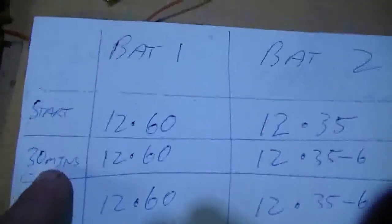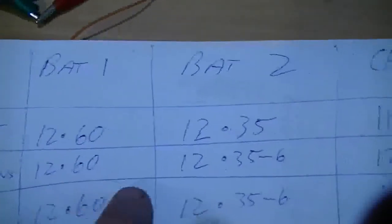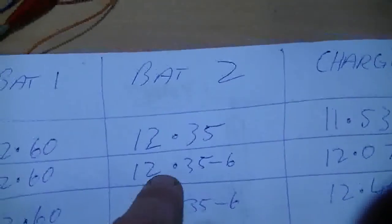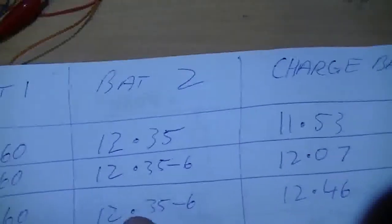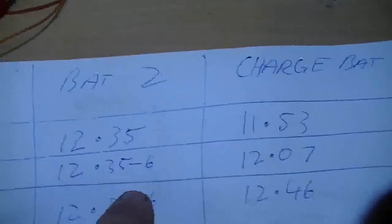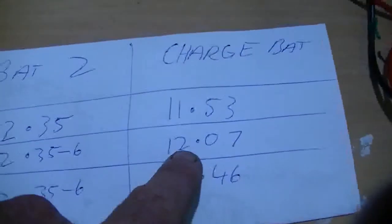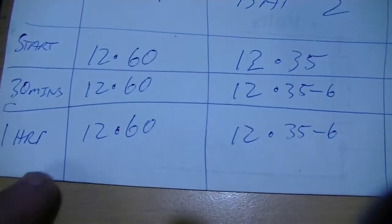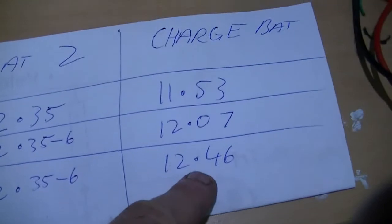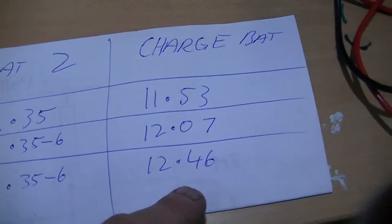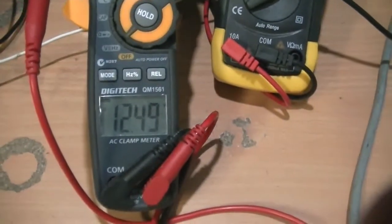So the results after 30 minutes, that battery was still 12.6. This was flicking between 12.35 and 12.36. And our charge battery had gone up to 12.07. And then after one hour of running we still got the same there, same there. And our charge battery is up to 12.46. At the moment it's now 12.4948.